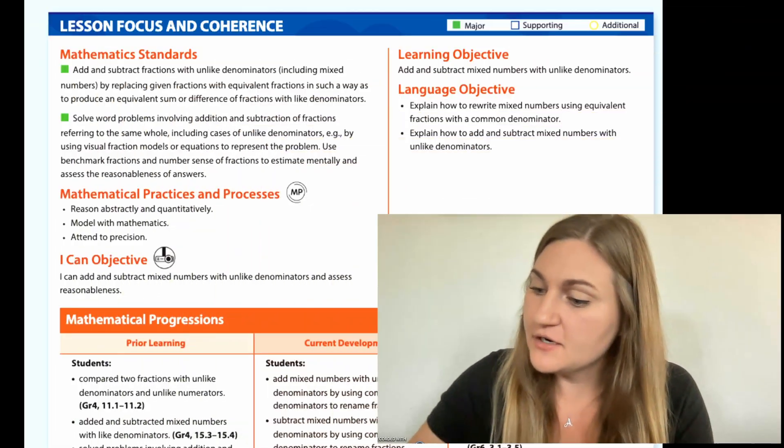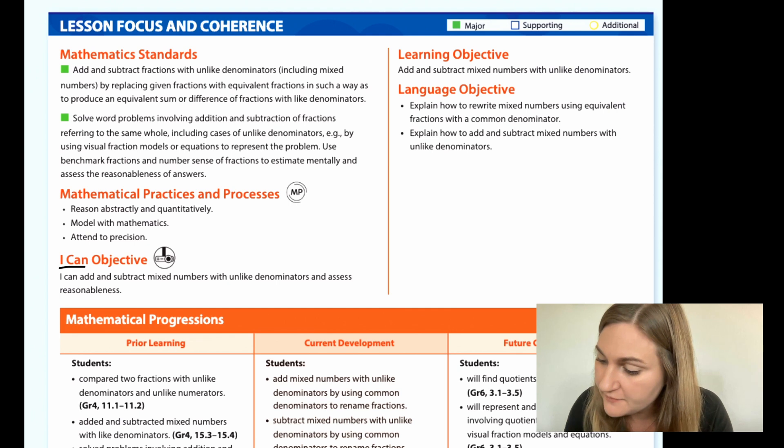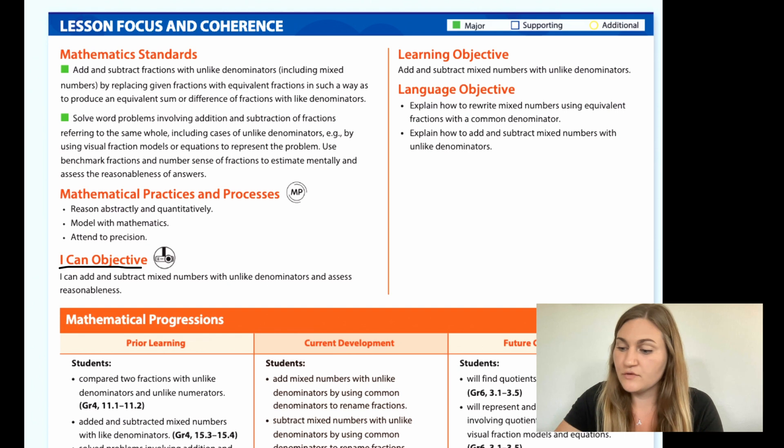Hi, I'm Natalie Rhodes, and this is IntoMath's 5th grade, Module 7, Lesson 3. I'm going to start off by going over the I Can Objective. It says I can add and subtract mixed numbers with unlike denominators and assess reasonableness.